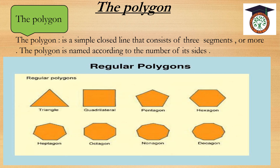In a triangle, the regular polygon is the equilateral triangle. In a quadrilateral, the regular polygon is the square. And we have regular pentagon, regular hexagon, regular heptagon, regular octagon, regular nonagon, and finally regular decagon.